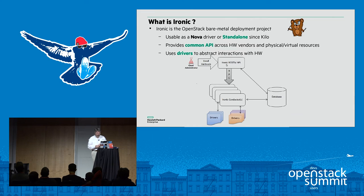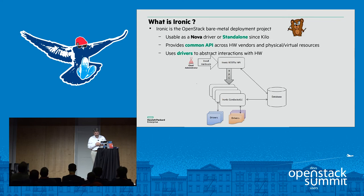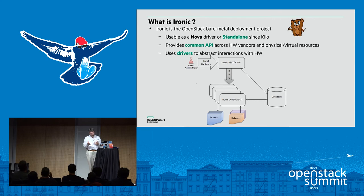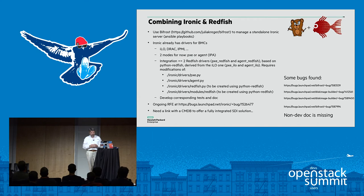I'm not the Ironic expert in the room — if you have questions about Ironic, ask the people in the first row. To make it simple, the goal of Ironic is really to manage bare metal deployment inside OpenStack. It can be used as a Nova driver or standalone. I personally like the standalone version a lot because I don't need to deploy a full OpenStack environment to test the driver. The goal of Redfish and the goal of Ironic are pretty aligned — we want a neutral way to interact with hardware. Ironic uses drivers to abstract hardware, and that's where we want to play with the combination of Redfish and Ironic.